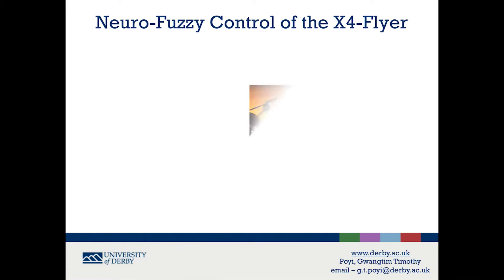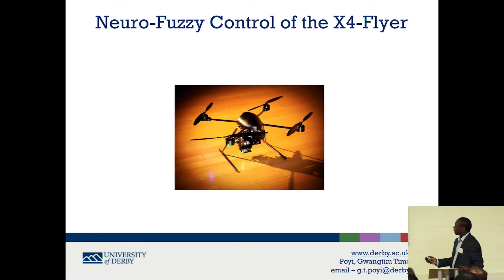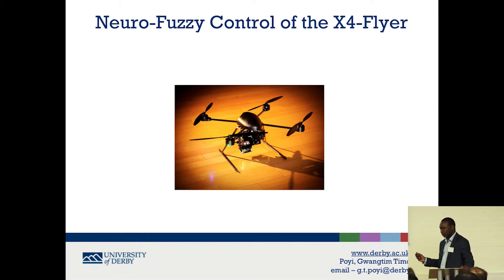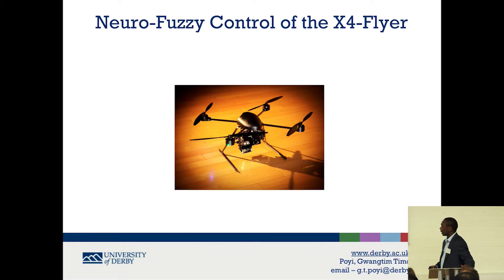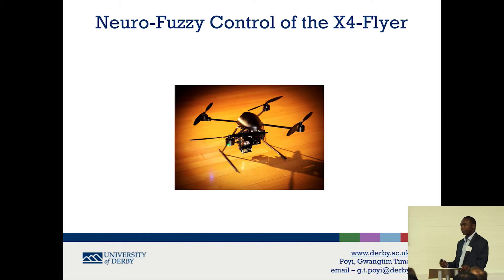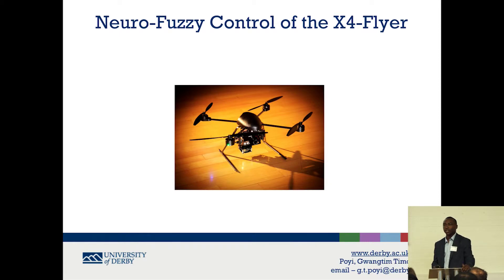It's a small unmanned helicopter and as you can see from the picture, it has four rotors mounted on the cross frame. It's symmetric in nature and that makes the dynamics of the vehicle a little simpler than most other helicopters. It carries a payload which normally would be a camera or any other thing like a robotic arm depending on the mission to be accomplished.